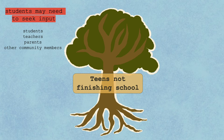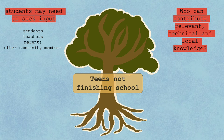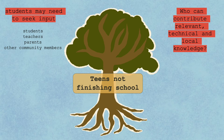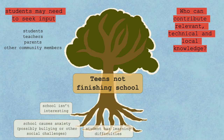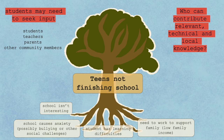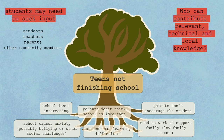In particular, you may want to brainstorm who in the community could contribute relevant, technical, and local knowledge. In this case, finding teens who didn't complete school might be an important resource. After doing this research, students might return to report a number of possible causes, such as school isn't interesting, school causes anxiety, possibly bullying or other social challenges, student has learning difficulties, need to work to support family, low family income, parents don't encourage the student, or parents don't think school is important.